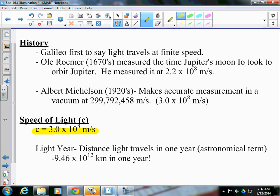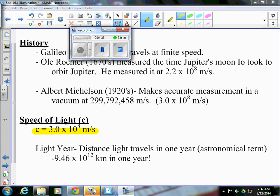So, speed of light is C. Light year is a distance, not a unit of time, explaining how far light travels in one year. And that's kind of our introductory lesson on light, 16.1.